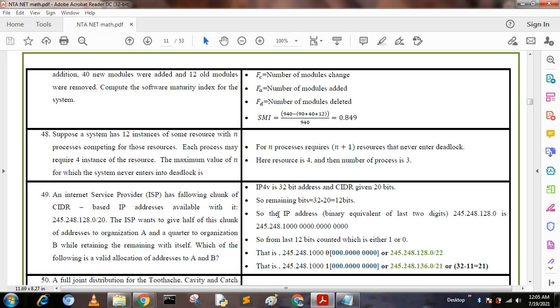We know that IPv4 is a 32-bit address and CIDR is given as /20, so remaining bits are 32 - 20 = 12 bits. The binary equivalent of the last two octets of 245.248.120.0 can be represented in binary form. From the last 12 bits, we count and determine the address allocation for organizations A and B based on the requirements.